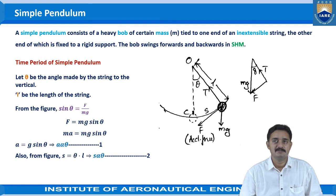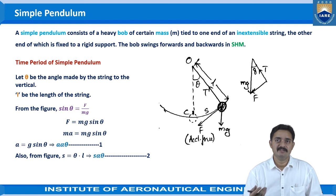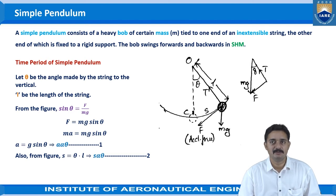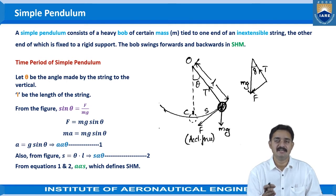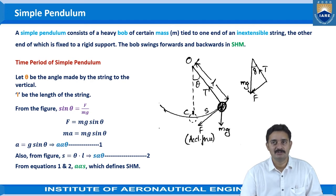This gives s is proportional to theta. As l is constant we can say s is proportional to theta, and in the first equation as acceleration due to gravity is constant, a is proportional to theta. From equations 1 and 2 we can say a is directly proportional to s, which defines simple harmonic motion.